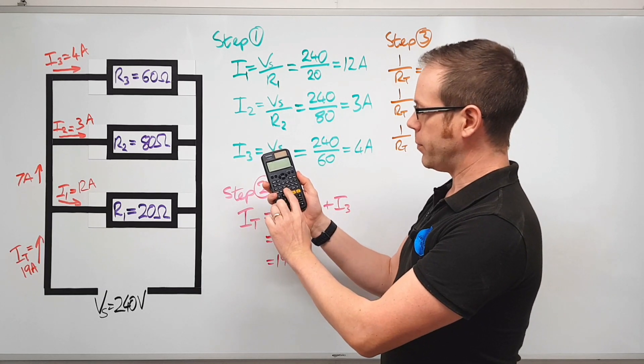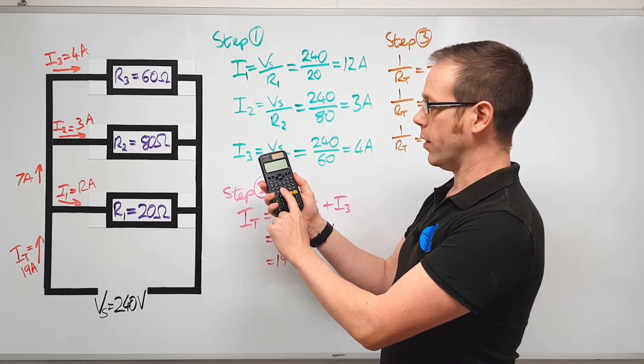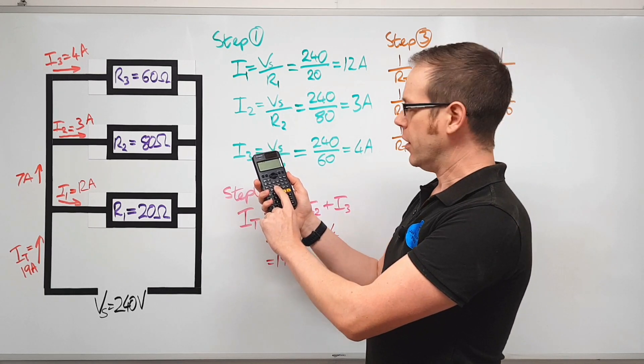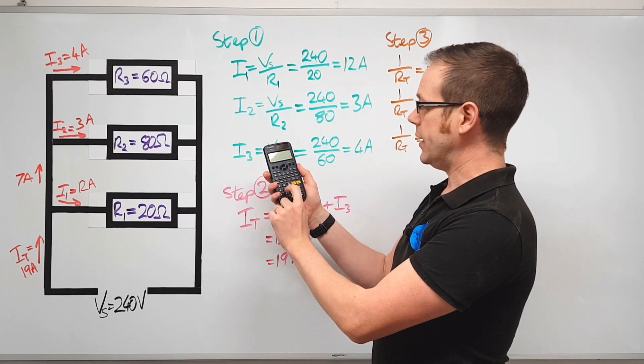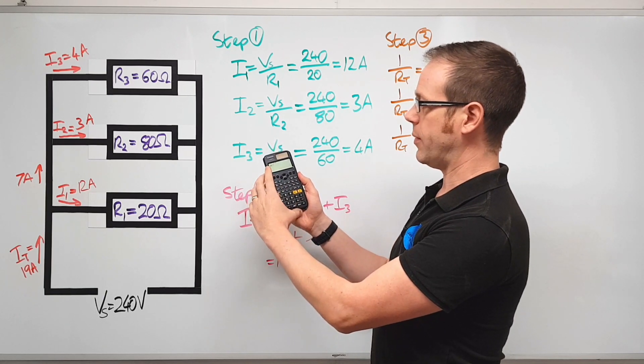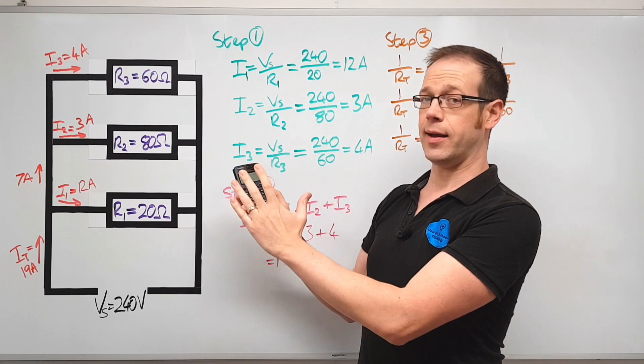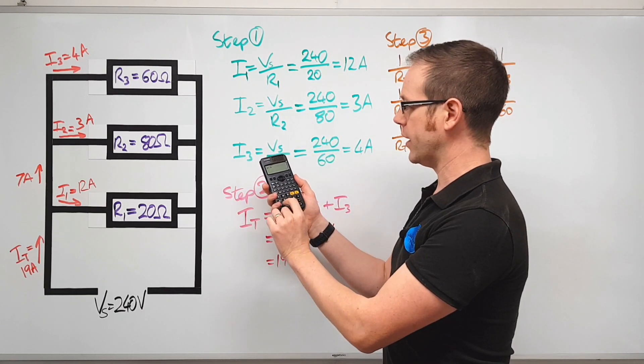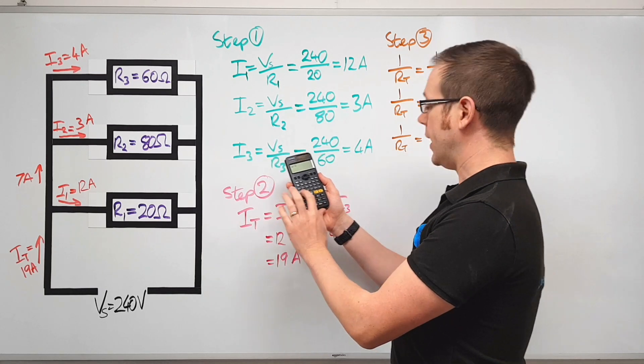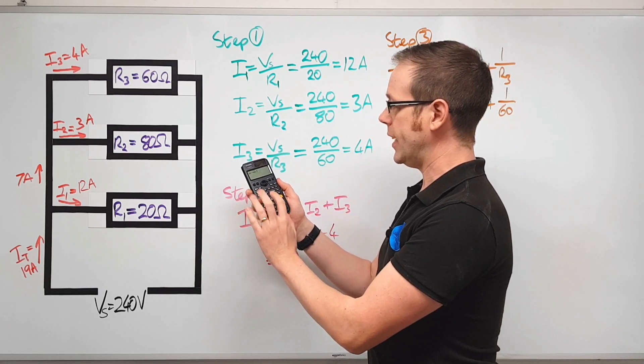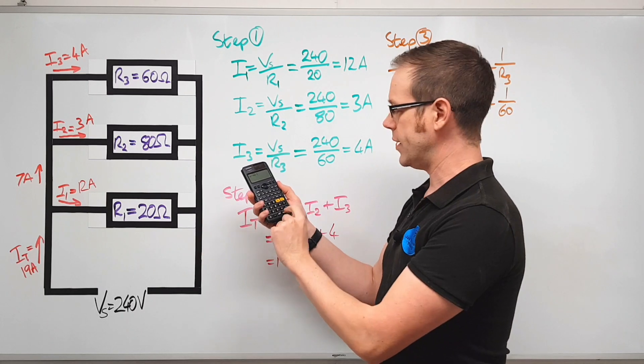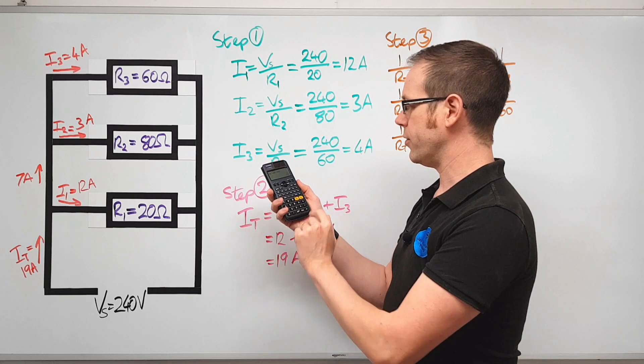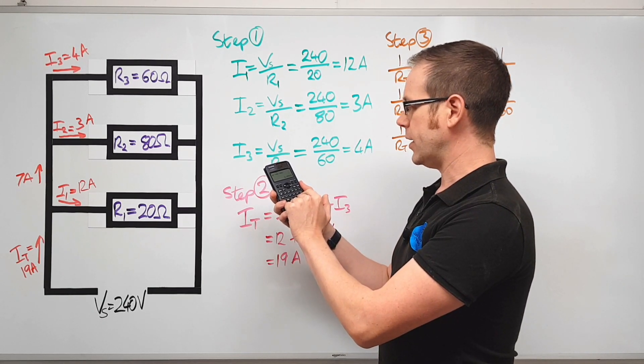What we're going to do, if you remember, this button here, x to the minus one, is the same as the one over x function. So in other words if I go 20 and then press x to the minus one, 20 to the power of minus one is exactly the same as one over 20. I've done a video that explains exactly why that is. Then we've got 80 to the minus one, which again is one over 80, plus 60 to the minus one, which again is one over 60. Add those together and we get this calculation here.